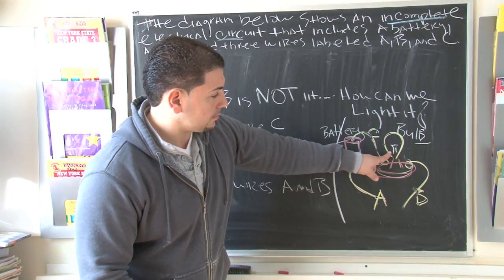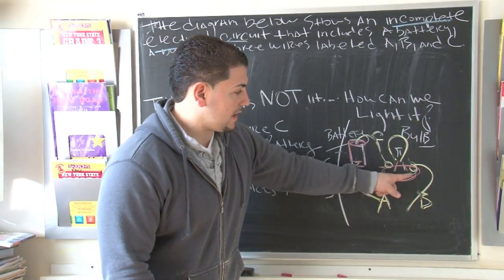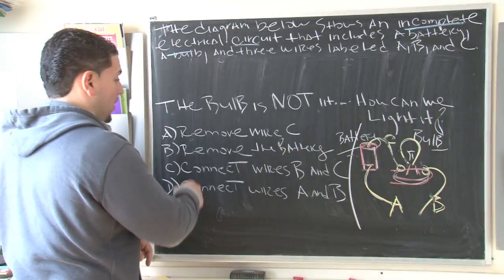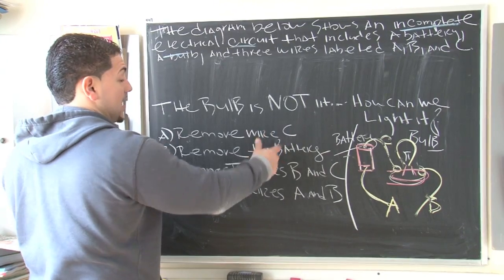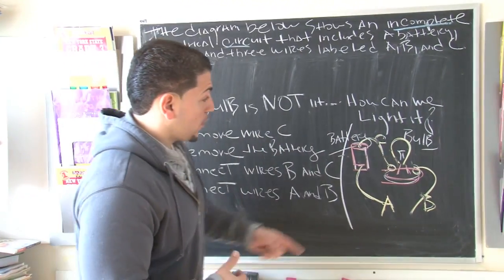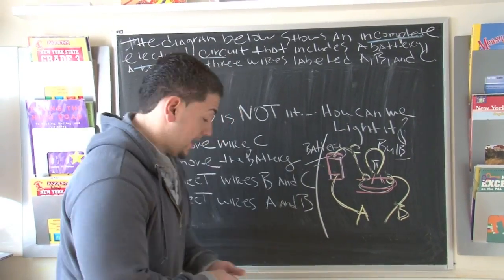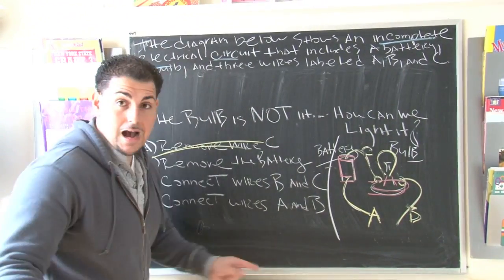Well, we have the bulb, we have the battery, everything seems to be connected, but something is missing, so let's check it out. It says, if we remove wire C, will the bulb light up? Well, we need wire C because it's connected to the battery and it's connected to the bulb, so we don't want to remove C. Let's leave C alone. That's out.